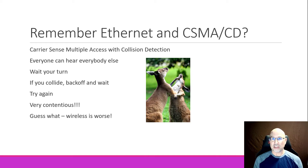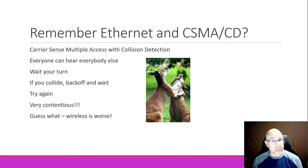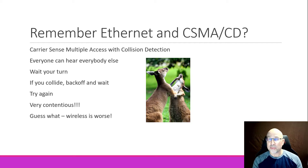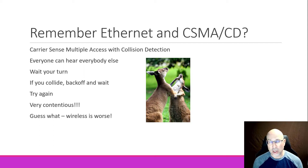Carrier Sense Multiple Access starts off with you listening to the network because everybody can hear what everybody else is doing. So you had to wait your turn. If the media was free, you could transmit. If it wasn't free, you had to wait. And if you started to transmit and you collided with somebody else — you had to be able to listen and transmit at the same time. That's what one pair was for, and then you had a receive pair.